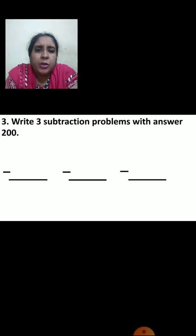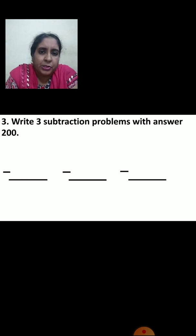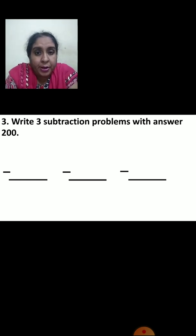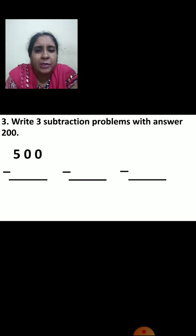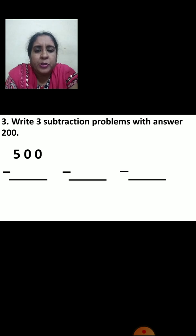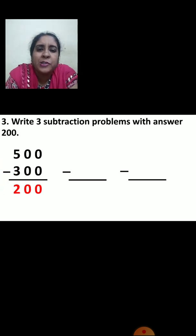Next question: write three subtraction problems with answer two hundred. You have to take any two numbers such that after subtracting you get the answer two hundred. First example: I have taken five hundred. I will take three hundred so that five hundred minus three hundred gives two hundred. Zero minus zero is zero, zero minus zero is zero, and five minus three is two. So the answer is two hundred. This is one example.